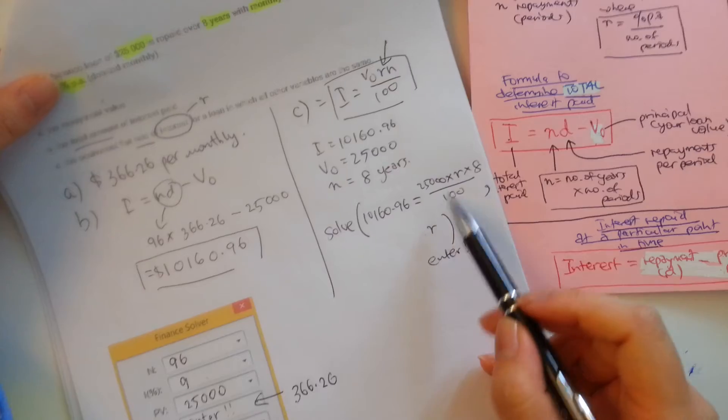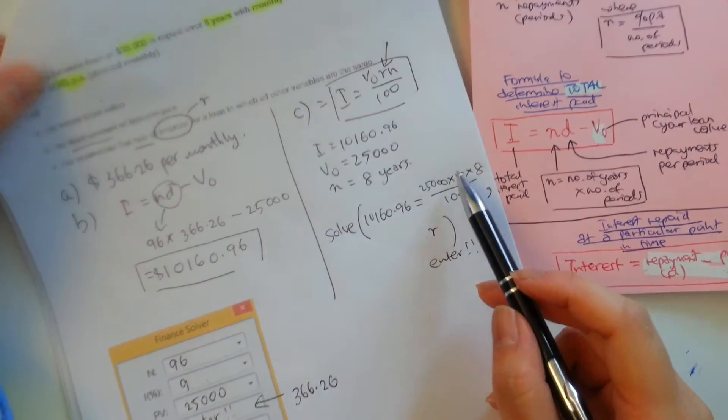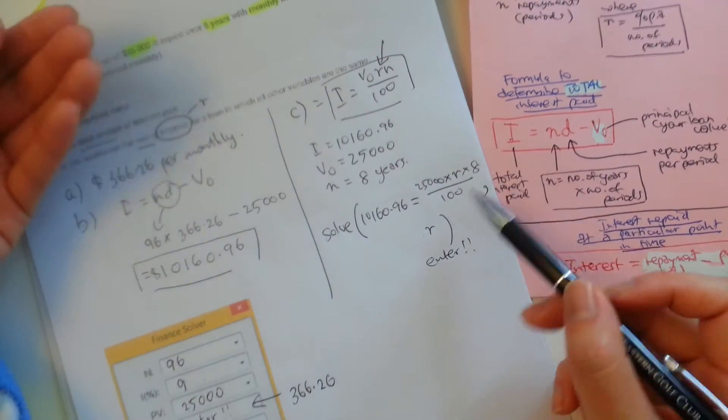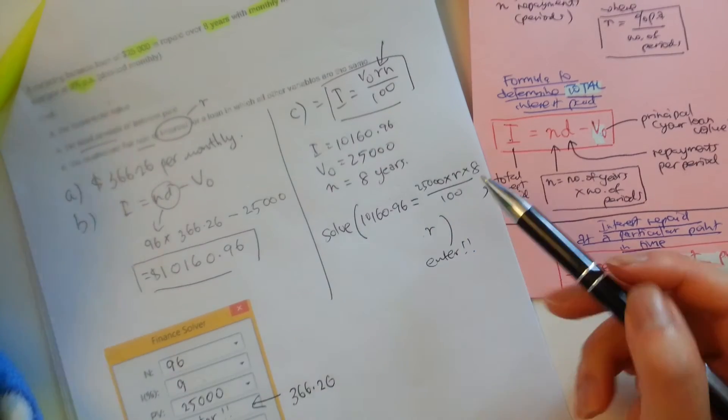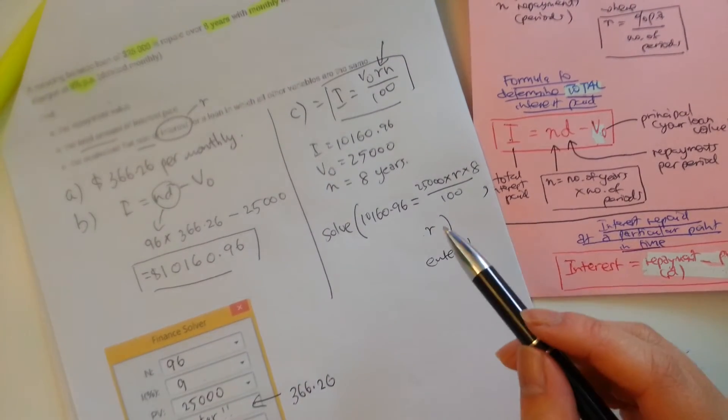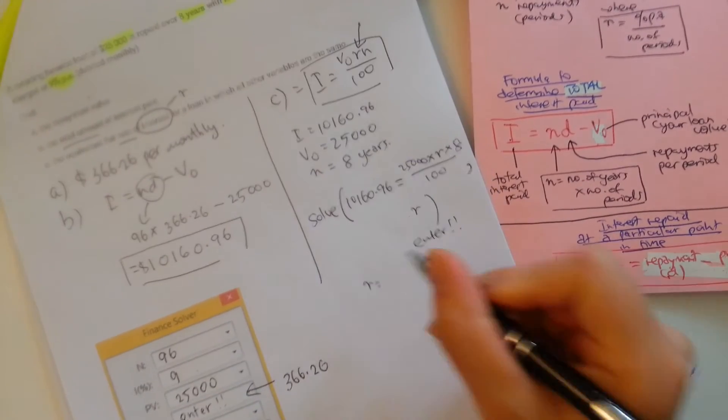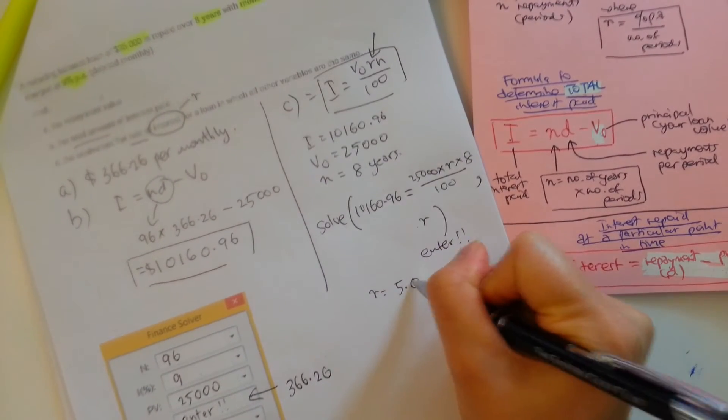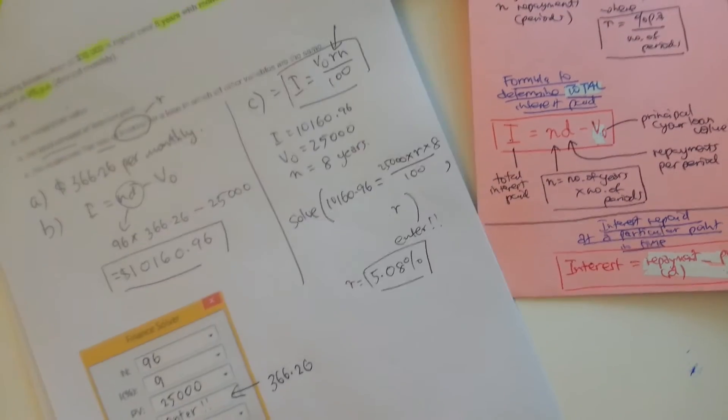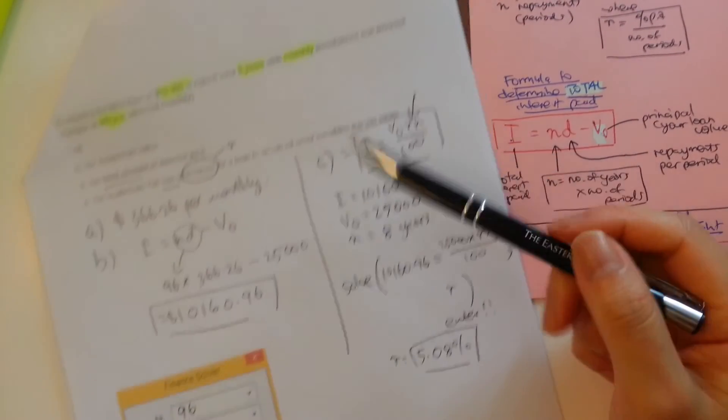Okay, because it will solve for that unknown figure for you. You can do it this way, or if you like to transpose a formula and work it out manually, you can do that as well. So it's really up to you.